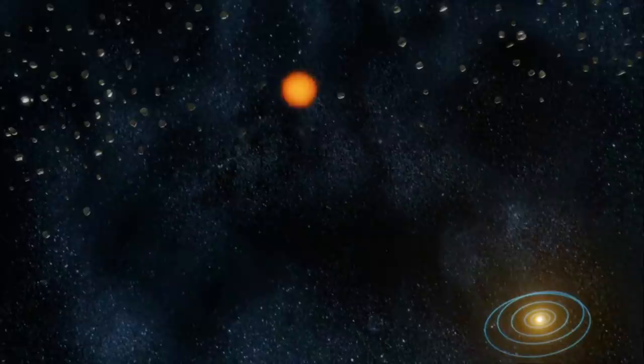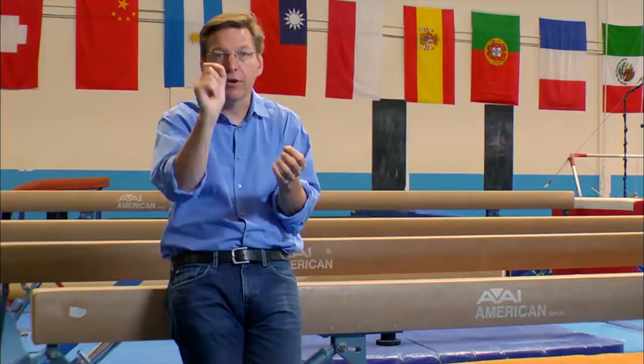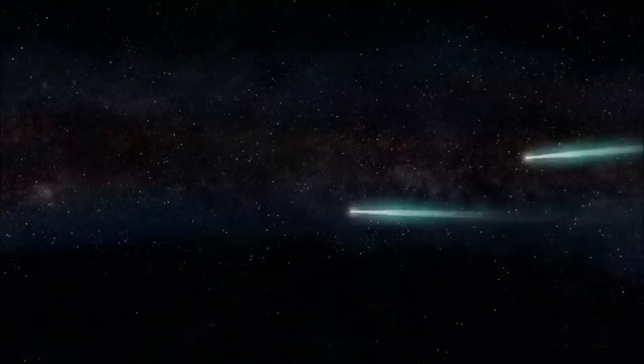But as Nemesis approaches, the inner solar system becomes a shooting gallery. And so there start to be a few more comets than usual, and then suddenly there are just comets, comets coming all the time. And at the peak, there might be 1,000 to 10,000 comets per year in the sky.